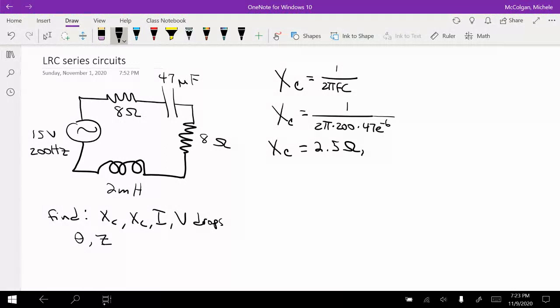Let's see, I think I wrote that wrong. I got that number wrong. So this is going to be XC is 16.9 ohms and negative 90 degrees.